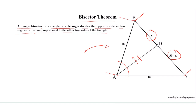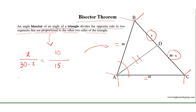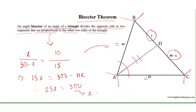AB equals 10 and AC equals 15 units. According to the theorem, we can write that x divided by (30 minus x) equals 10 divided by 15. So 15x equals 300 minus 10x, therefore 25x equals 300, which results in x equals 12.